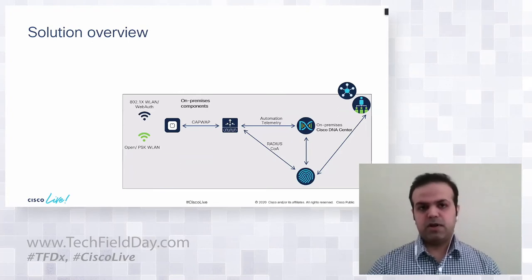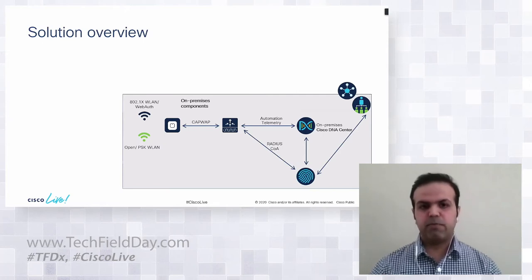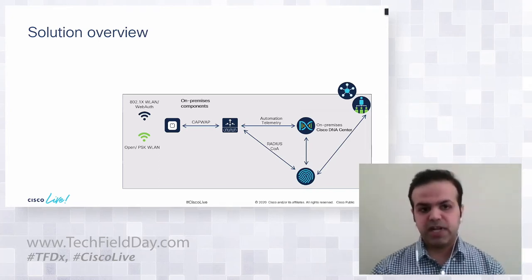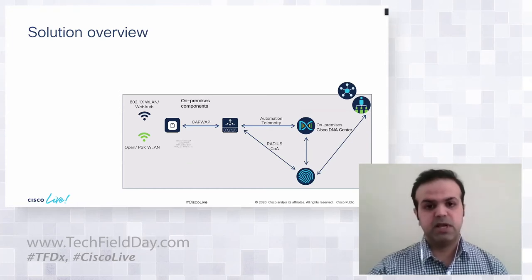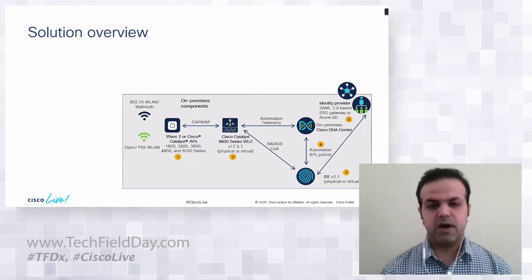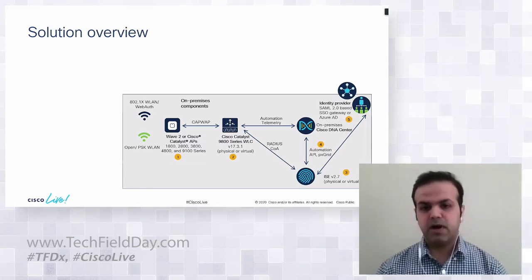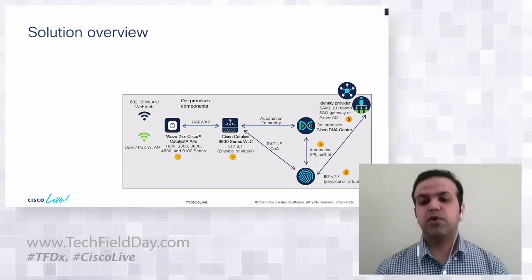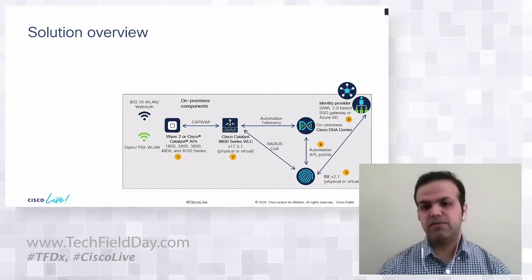So how does it work? Different components come together to make the solution possible. You need either Wave 2 or Cisco Catalyst access points, an on-prem or virtual 9800 WLC controller, an ISE, and Cisco DNA Center — these are the on-prem components. The organization also needs an identity provider such as Azure AD or an on-prem Active Directory to validate which users are connecting to the network.